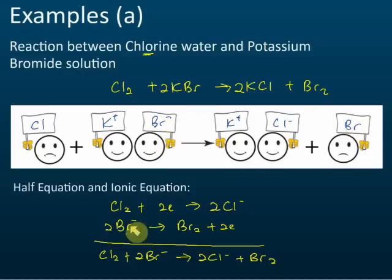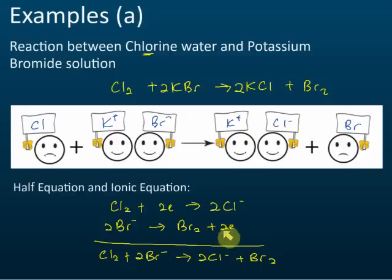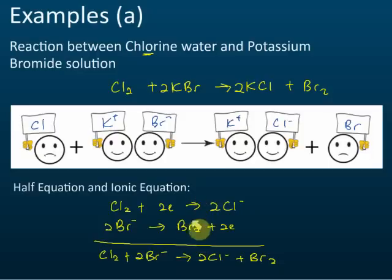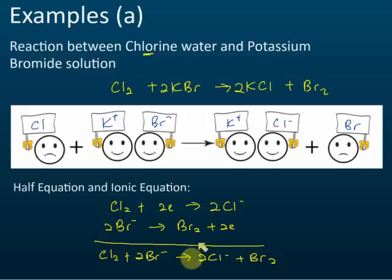Bromide becomes bromine and releases two electrons — electrons written on the right-hand side means releasing electrons. We then combine these two half equations together and cancel the electrons to get the ionic equation. So we have: the chemical equation, the two half equations, and the ionic equation.